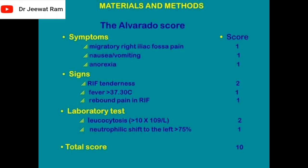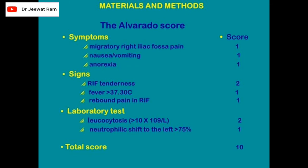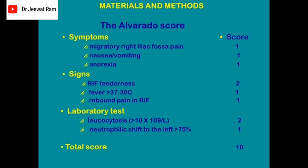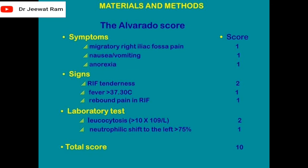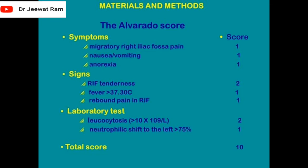The Alvarado score — total score is 10. Symptoms: migratory right iliac fossa pain (score 1), nausea/vomiting (score 1), anorexia (score 1). Signs: right iliac fossa tenderness (score 2), fever greater than 37.3°C (score 1), rebound pain in right iliac fossa (score 1). Laboratory: leukocytosis (score 2), neutrophilic shift to the left greater than 75% (score 1).